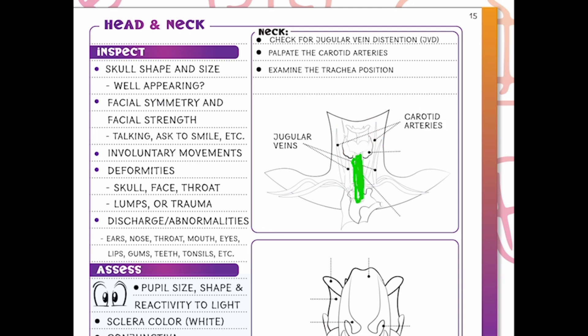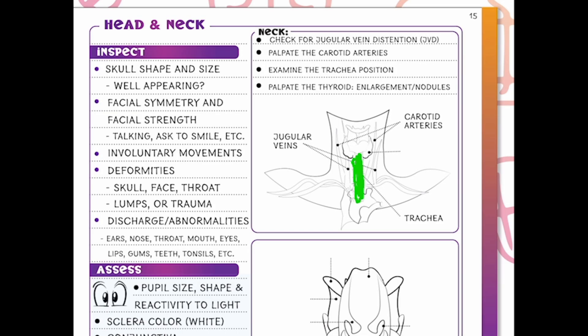Then we look at our trachea position. We want to make sure everything is nice and midline and that the airway looks patent. We'll talk more in our respiratory lessons about tracheal deviation, which is a sign of a pneumothorax — an emergent situation. We're also going to palpate our thyroid — that nice little butterfly gland that sits in the neck — making sure we don't see any enlargement or nodules.